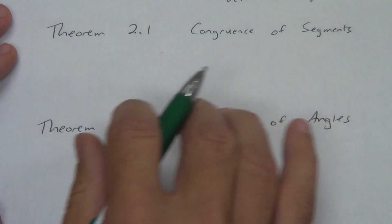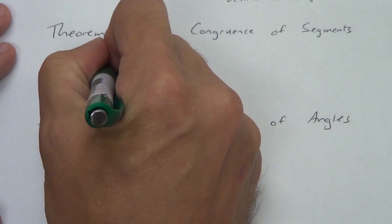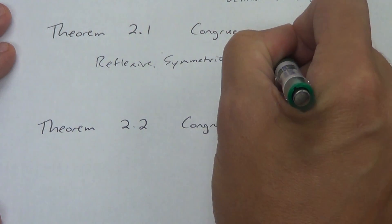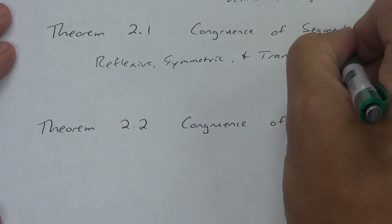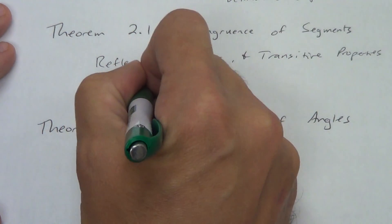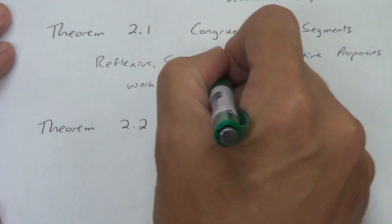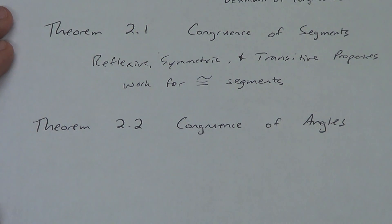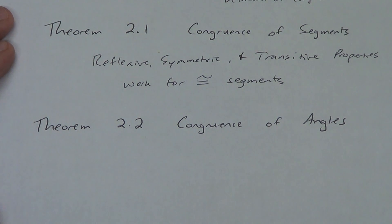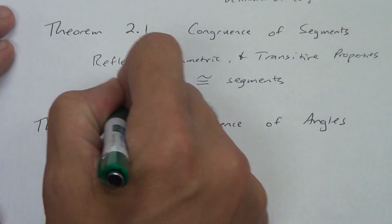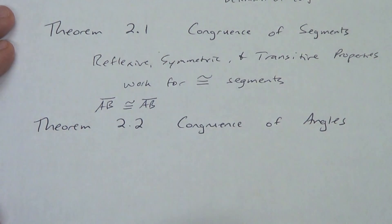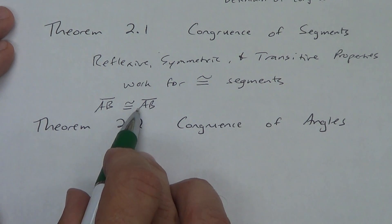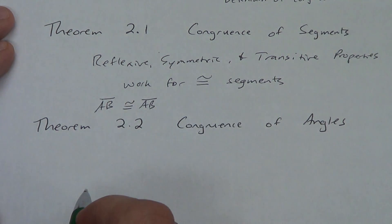So theorem 2.1, congruence of segments — what this says, and the book goes into more detail, is that the reflexive, symmetric, and transitive properties work for congruent segments. So remember what reflexive was: AB equals AB. Reflexive just says that segment AB is congruent to segment AB — a segment is congruent to itself. So the reflexive property — we just say 'reflexive property of congruence.'